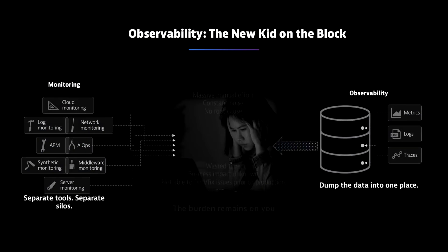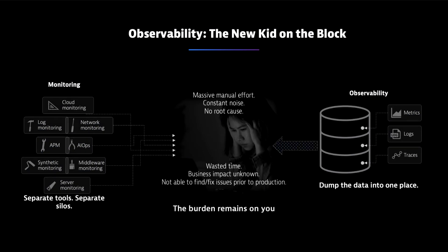We've heard a lot about observability in the industry, and it's important that as we make this change, we ensure a perfect end user experience. But the reality is many companies are flying blind. Observability tools and practices often ignore end user experience and fail to put application and infrastructure performance into the context of business outcomes. There are also many tools that just don't talk to each other, which can translate to a lack of understanding, customer impact, and brand damage.